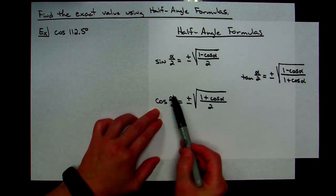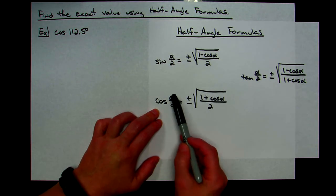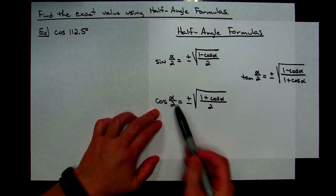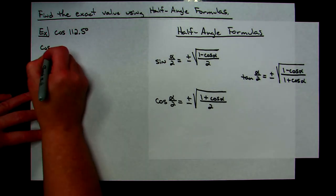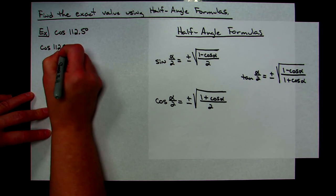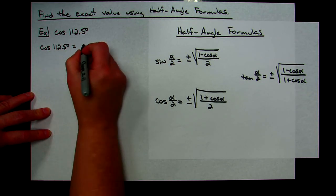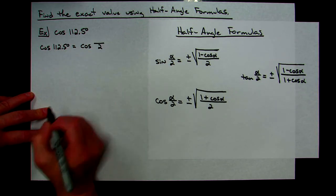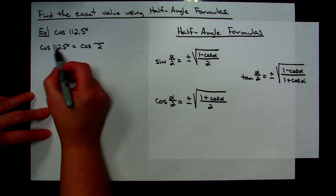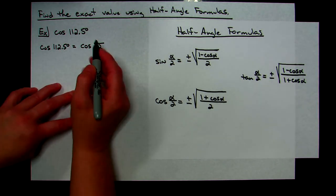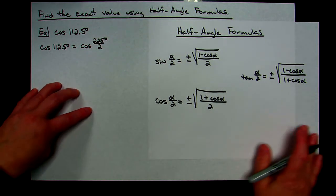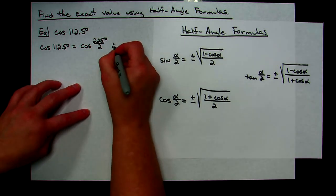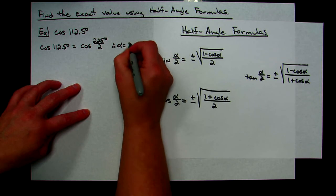This is showing alpha divided by 2, so I need to find what the alpha angle is. I can write an equivalent statement: the cosine of 112.5° is the same as the cosine of some angle divided by 2. Taking 112.5 times 2 gives us alpha = 225 degrees.